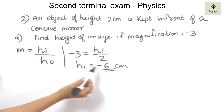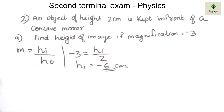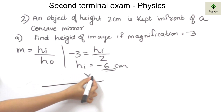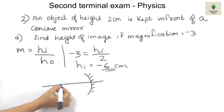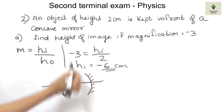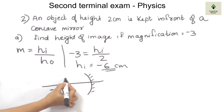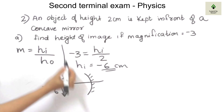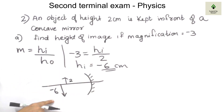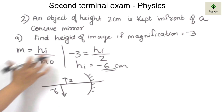The height of the image is minus 6 cm. The image is below the principal axis in the concave mirror. The magnification is minus 3, which is negative. The height of the object is plus 2 cm. Since the magnification is negative, this image is an inverted image.